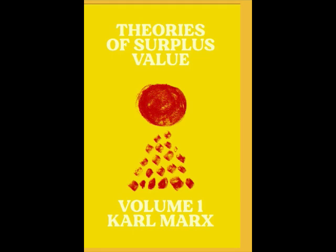Section 1: Productive Labor from the Standpoint of Capitalist Production — Labor which Produces Surplus Value. Productive labor, in its meaning for capitalist production, is wage labor which, exchanged against the variable part of capital — the part of the capital that is spent on wages — reproduces not only this part of the capital, or the value of its own labor power, but in addition, produces surplus value for the capitalist. It is only thereby that commodity, or money, is transformed into capital, is produced as capital. Only that wage labor is productive which produces capital. This is the same as saying that it reproduces, on an enlarged scale, the sum of value expended on it, or that it gives in return more labor than it receives in the form of wages.